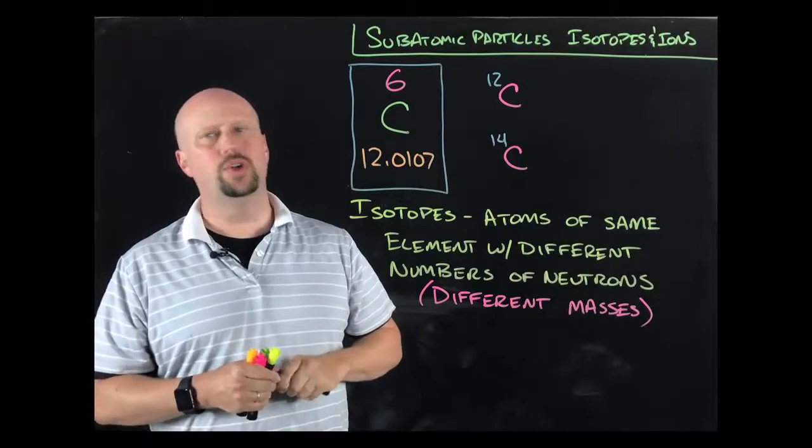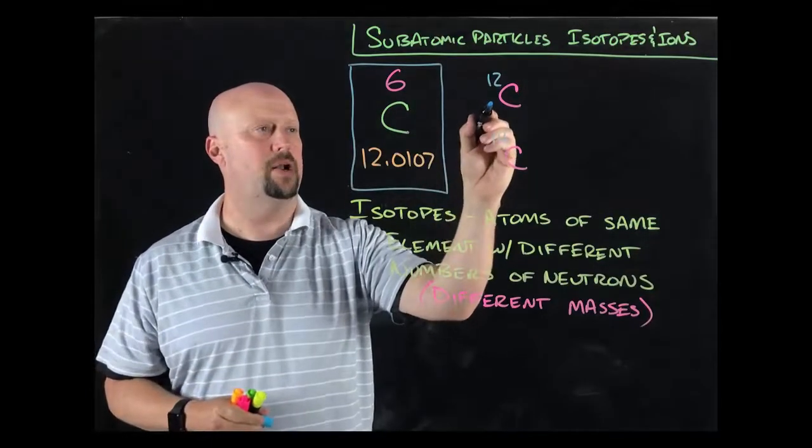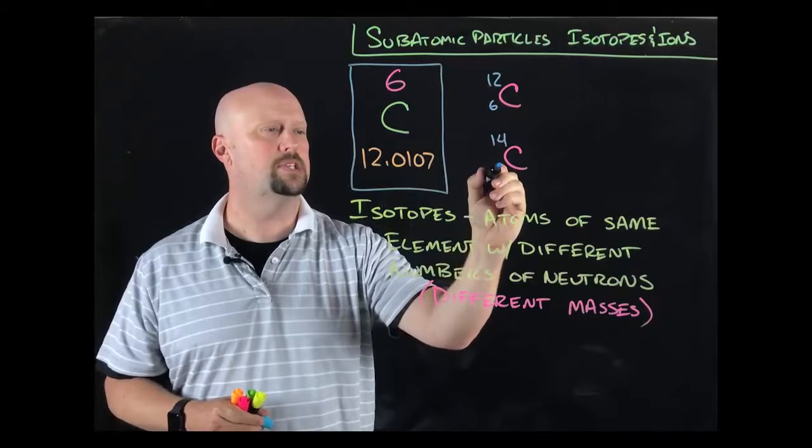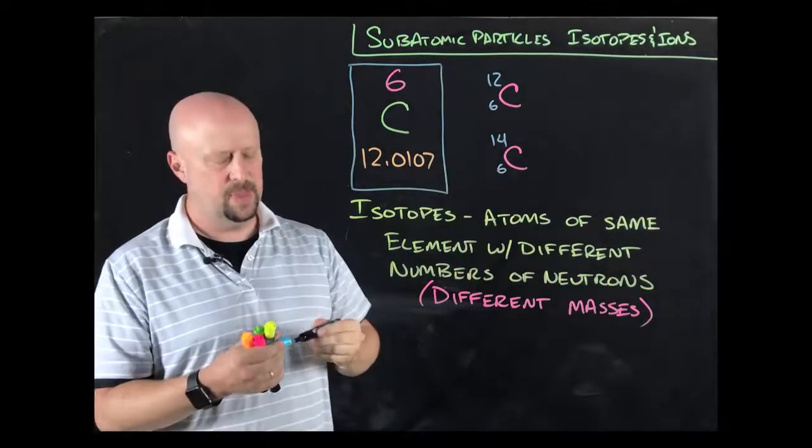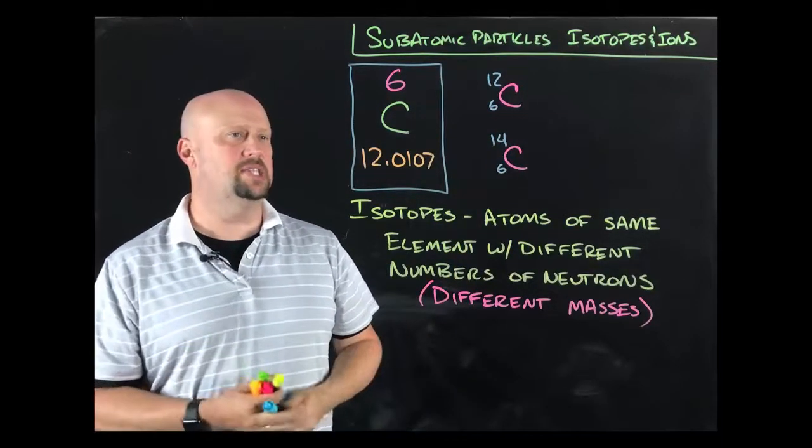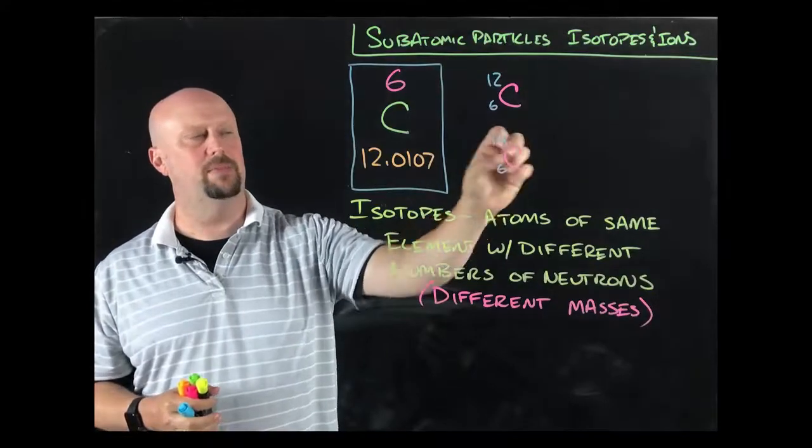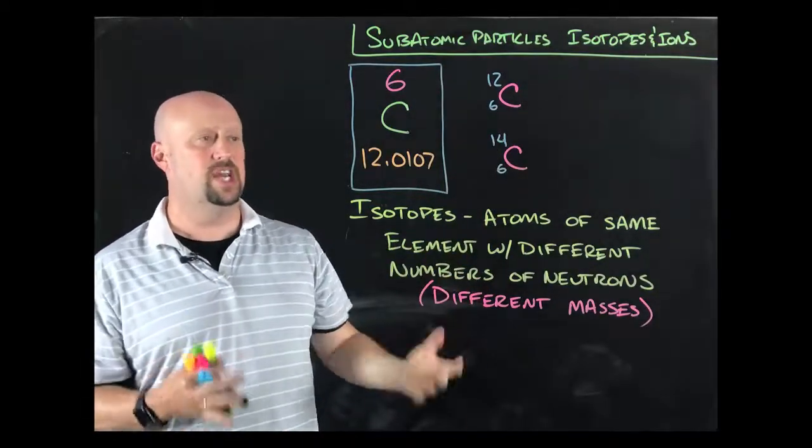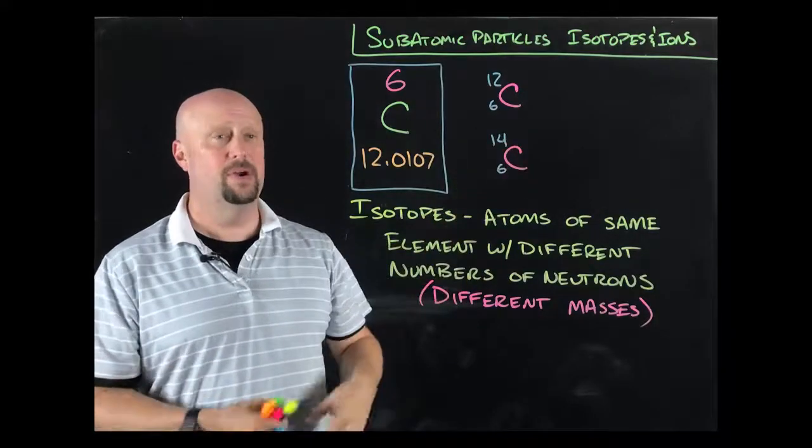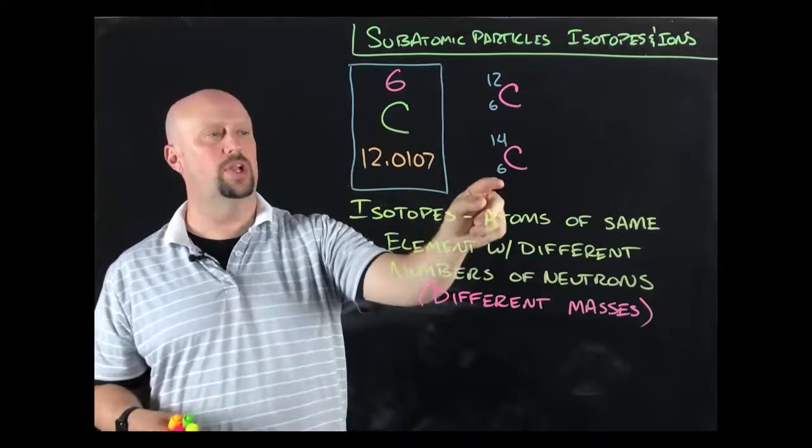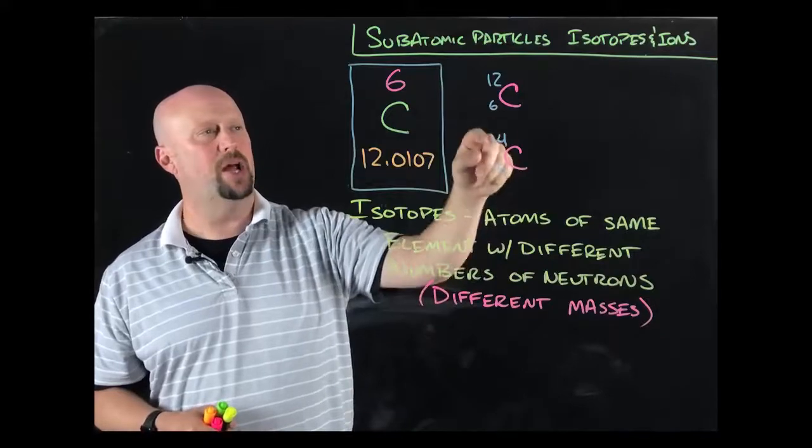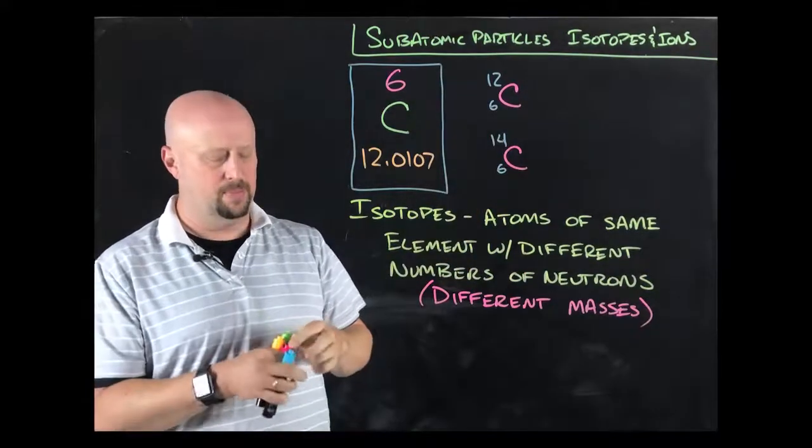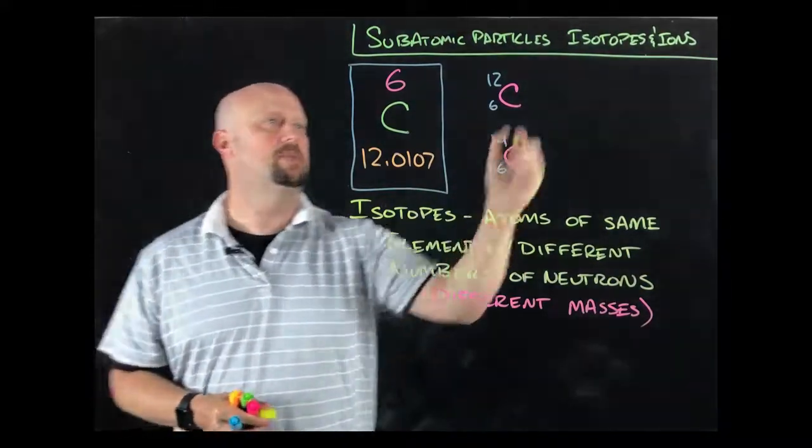Now, if we're being technical, you could also write down at the bottom the atomic number. That's also pretty common to write for these. It's not strictly speaking necessary because by the measure of the fact that it's carbon, it has to have an atomic number of six. If it had a different atomic number, then it wouldn't be carbon. And so I don't really have to write that bottom number. But what I do have to write is that top number.